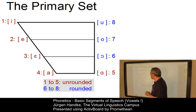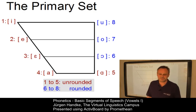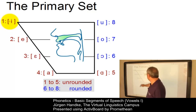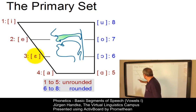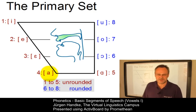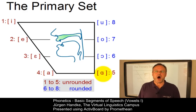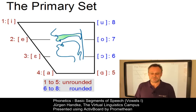Here is the primary set of cardinal vowels. Cardinals one to five are produced with spread lips, while cardinals number six to eight are produced with rounded lips.